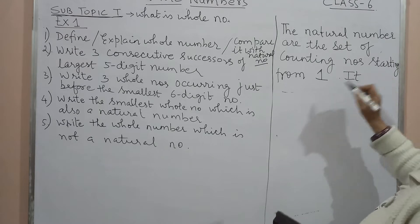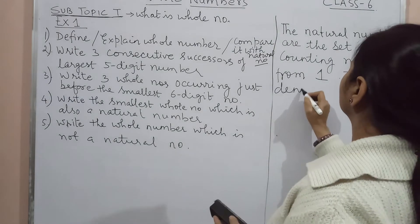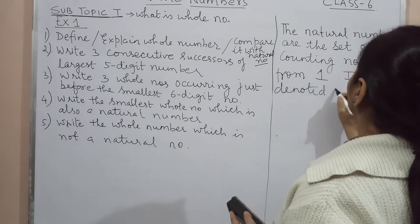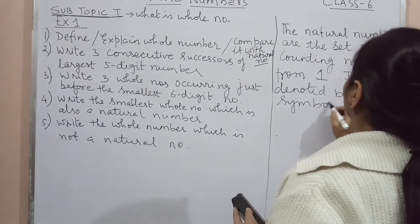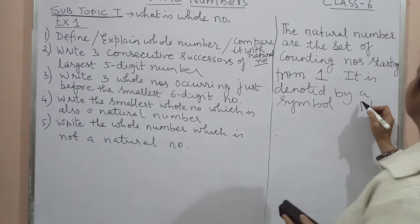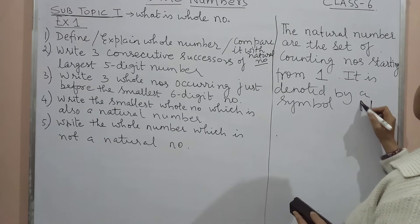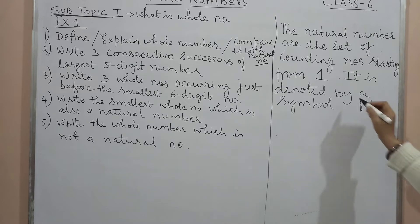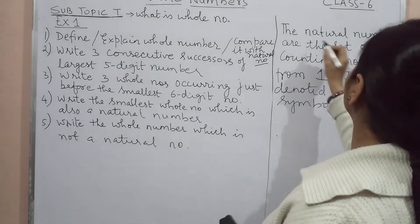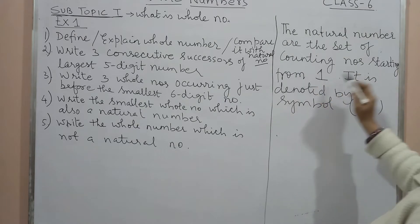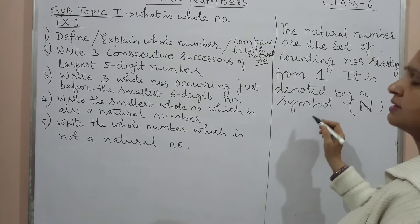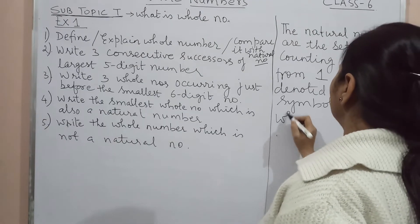So the natural number, and it is denoted by a symbol N. Capital N se hum isko symbolize karte. By a symbol which is N. Now what is whole number? Toh whole number ko explain karne ke liye you start with the natural number. The set of counting numbers, natural numbers which starts from one. It is denoted by a symbol N. Now what are whole numbers?